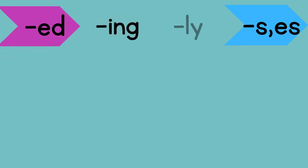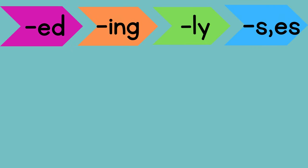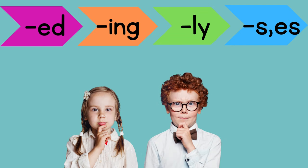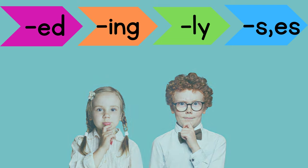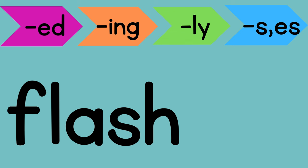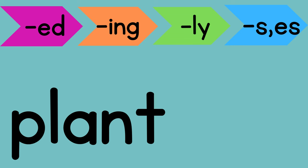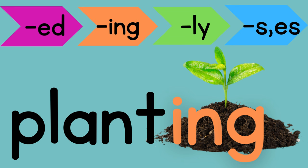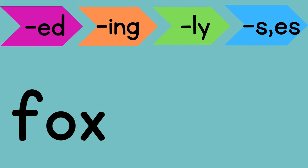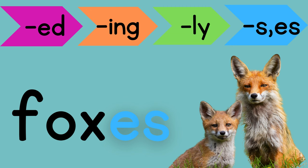Now let's check and see how you match up suffixes to make new words. I'll show you a base word and tell you what's happening — you name the suffix. Flash: what suffix should we add if it already happened? Flashed — E-D. Plant: what suffix should we add to mean we're doing it right now? Planting — or plants is also correct. Fox: what suffix makes this word mean more than one? Foxes — it's -es because it ends with an x.